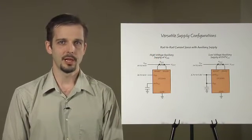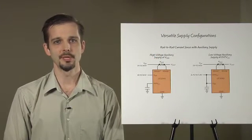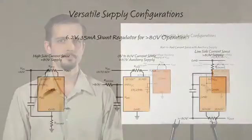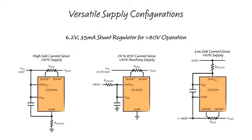Even with a low voltage supply, the current sense and voltage measurement still extend to 80 volts. What if your supply exceeds the 80 volt operating voltage of the LTC2945, as might occur in an offline regulator application?